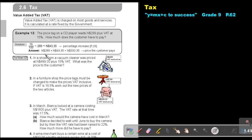But let's look at this example. The price tag on a CD player reads N$289 plus VAT at 15%. How much does the customer have to pay?